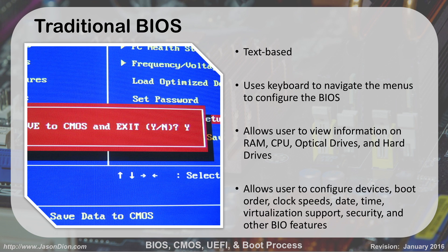Once you get in there, you have two types of BIOS that you might see. One is the old traditional BIOS, which is a text-based system. Those look like what I have on the screen — with these, your mouse doesn't even work; it's all about your keyboard. Up and down keys, Page Up, Page Down, Enter, and Space Bar make all your changes. It allows you to view information on your RAM, CPU, optical drives, hard drives, and configure all these different settings as needed for the BIOS.